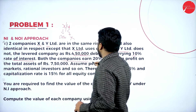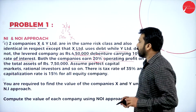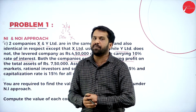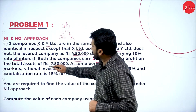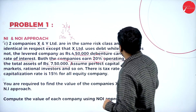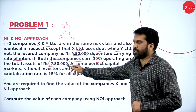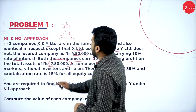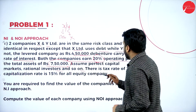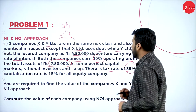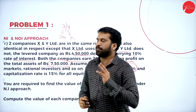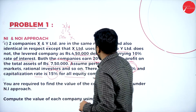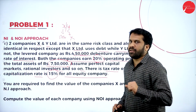Both companies earn 20 percent operating profit, calculated on total assets. Assume a perfect capital market with rational investors. The tax rate is 35 percent, and the capitalization rate — cost of capital — is 15 percent for an all-equity company.